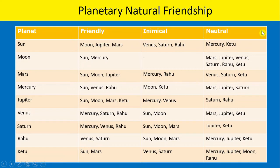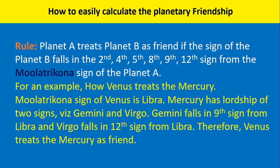Remembering this table is quite difficult, so I am giving you one tip to easily calculate the planetary friendship. The rule: Planet A treats Planet B as friend if the sign of Planet B falls in the 2nd, 4th, 5th, 8th, 9th, or 12th sign from the Mulatrikona sign of Planet A.